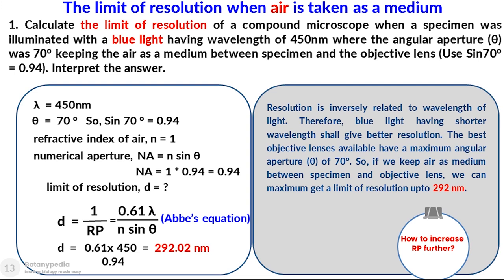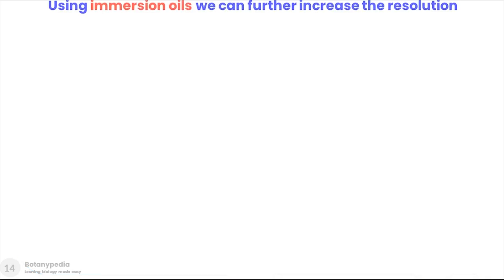With these parameters, taking air as a medium, the maximum limit of resolution achievable is 292 nanometers. If we want to further improve the resolution, we can increase the resolving power by using immersion oils. To understand this, we must look at two cases — Case A and Case B — which illustrate how specimens are mounted on the stage and how immersion oils enhance resolving power.